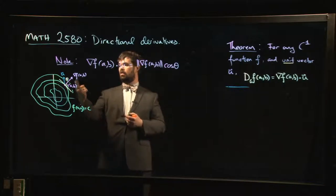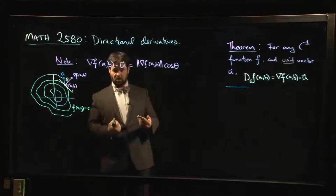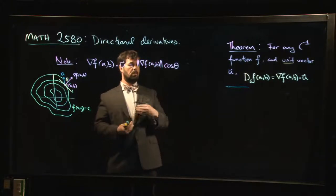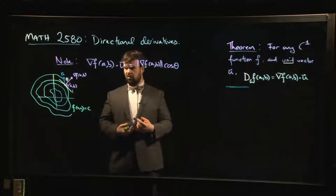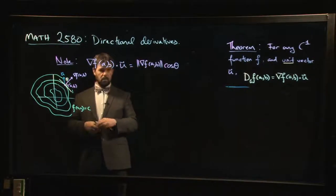So this gives you a nice interpretation of the gradient vector. It gives you this direction of steepest ascent, the direction in which your function is increasing most rapidly. And the magnitude is giving you the rate at which your function is going to change if you move in that direction.